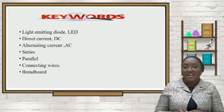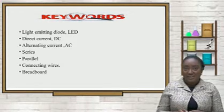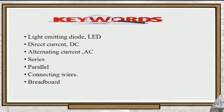Some of the key words we will encounter in our lesson today are light emitting diode or LED, direct current or DC, alternating current or AC, and series arrangements.